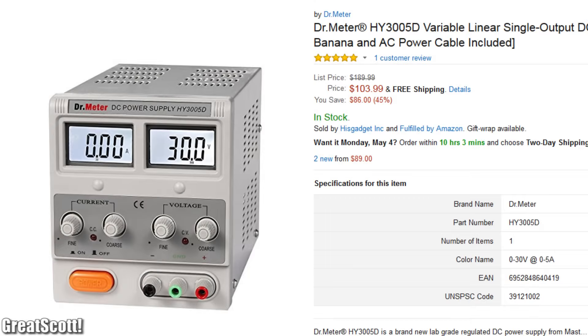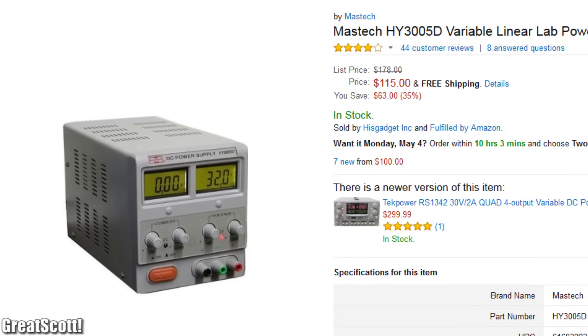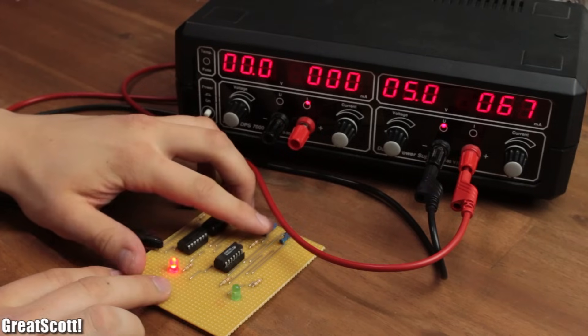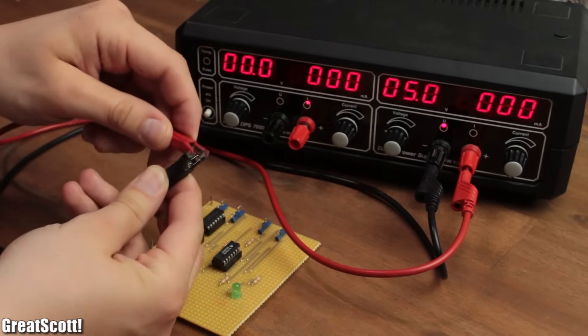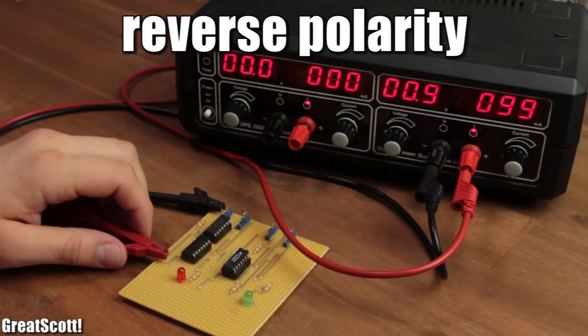A variable lab bench power supply is one of the most important tools an electronics maker can own. It's mandatory while testing circuits because you can now limit the current. If something goes wrong during prototyping, then this means most things will not blow up anymore.